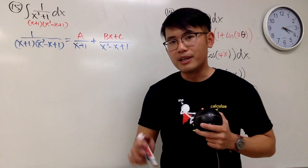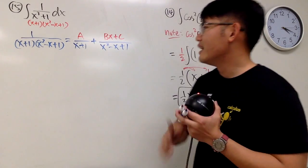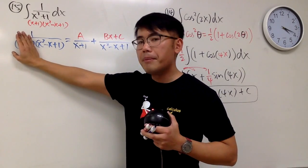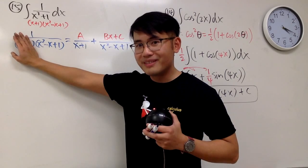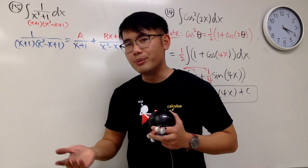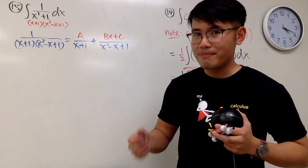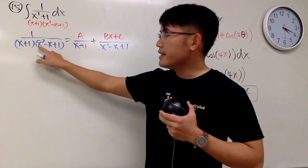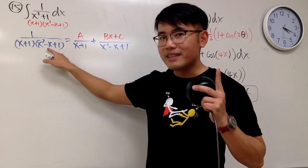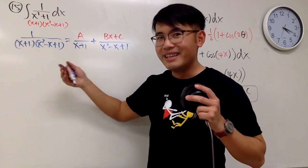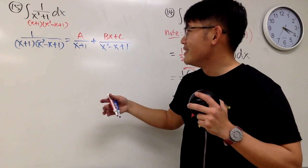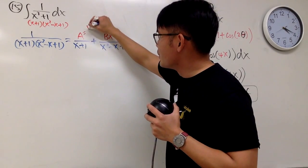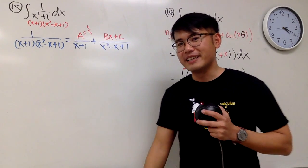A is easy to figure out because we can use the cover-up method. I go to the original denominator, cover up the (x+1) factor, and ask: what do I need to put in to make this zero? I need x equal to negative 1. Plugging in negative 1: negative 1 squared is 1, negative times negative 1 is another 1, total 2, plus 1 is 3. So A equals positive 1 third. That is very nice.